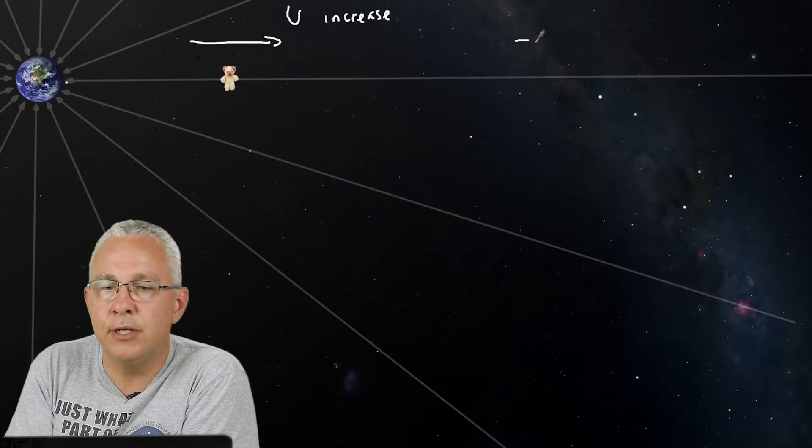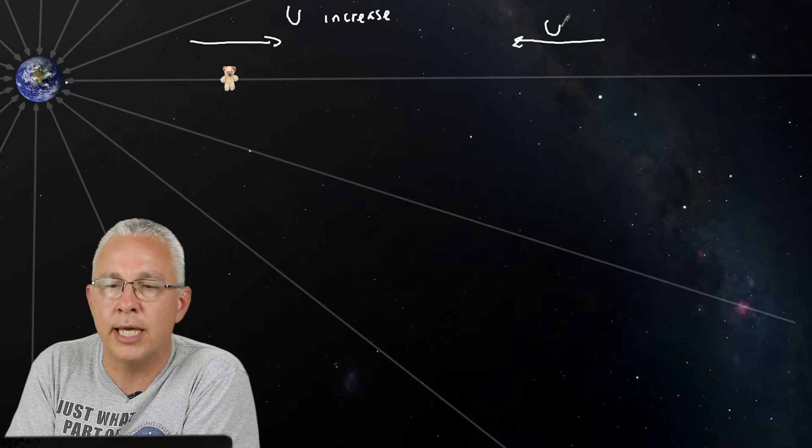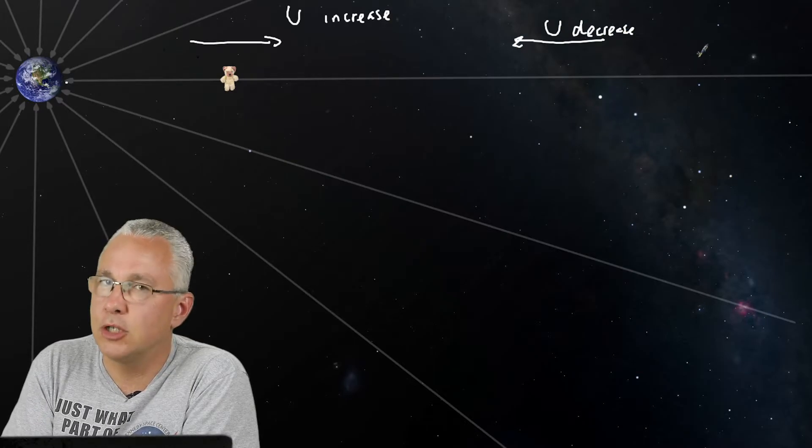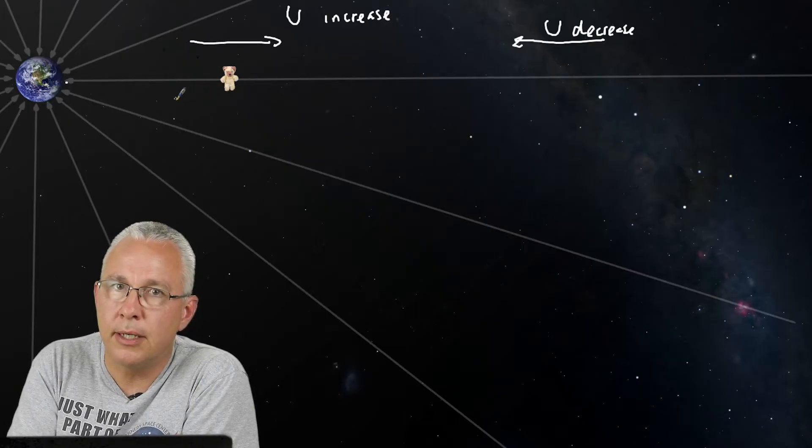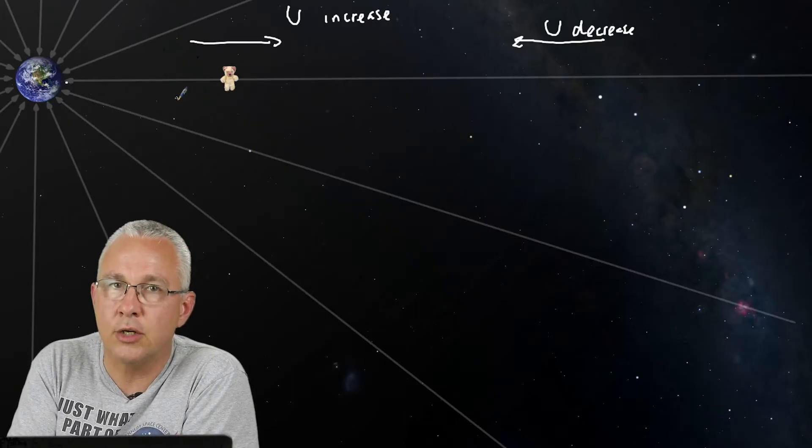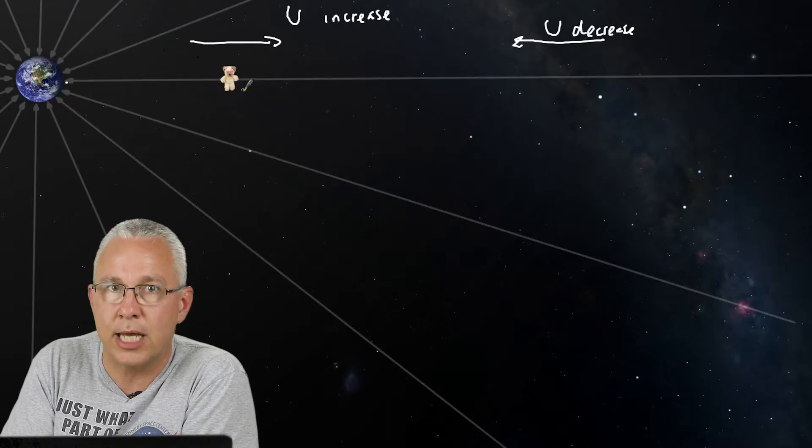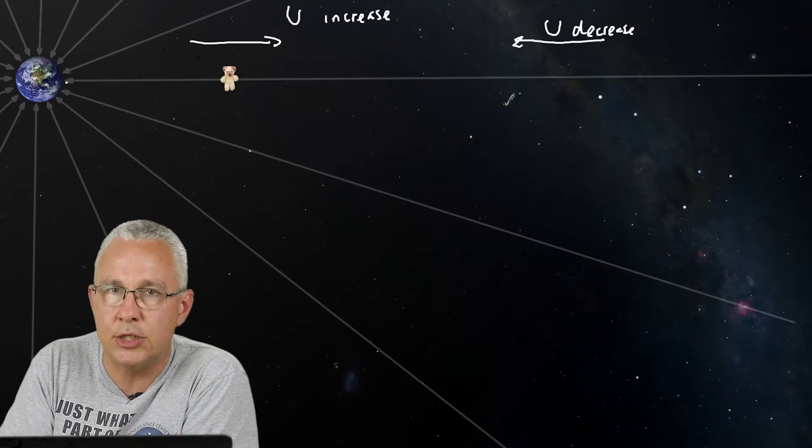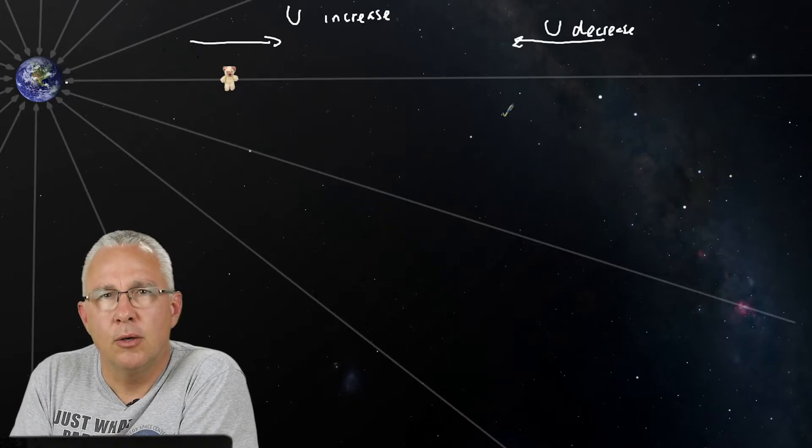But do you remember what I said to you right at the beginning? I said, if I'm moving away from the Earth in that direction, my gravitational energy has to increase. But if I'm moving towards the Earth, my gravitational energy has to decrease. Why? Because if I let Teddy drop, he gains kinetic energy, and conservation of energy says that's got to come from somewhere, which is, of course, our loss in gravitational energy.